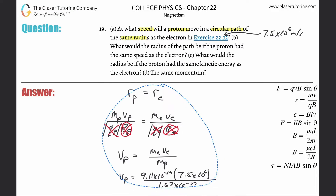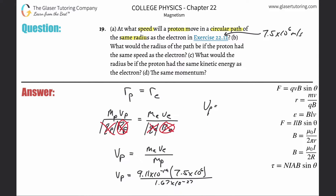That's all the work — now just solve it. Plug it into the calculator. So it becomes 9.11 times 10 to the minus 31, times 7.5 times 10 to the sixth, divided by 1.67 times 10 to the minus 27th. The velocity comes out to about 4.09 times 10 to the third meters per second. That is the velocity of the proton.